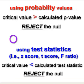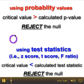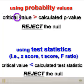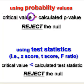Now in this case, if the critical value, normally 0.05, is greater than the calculated p-value, you reject.